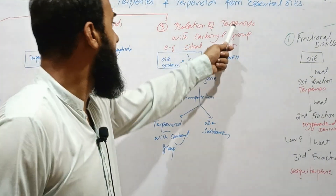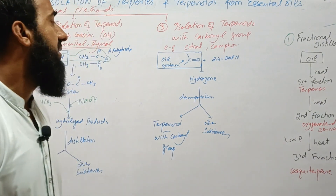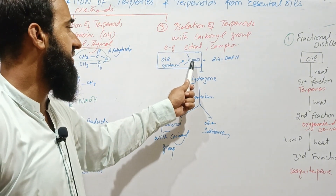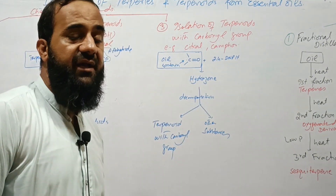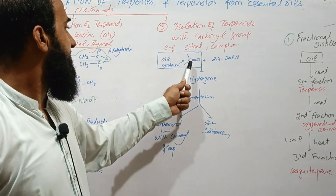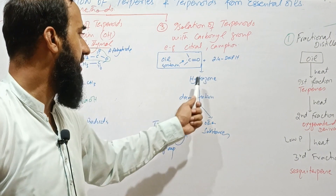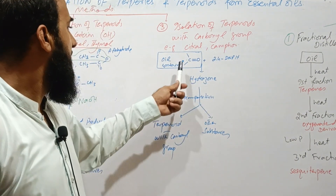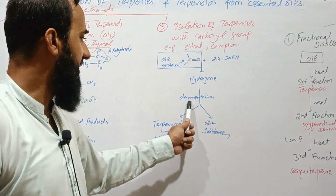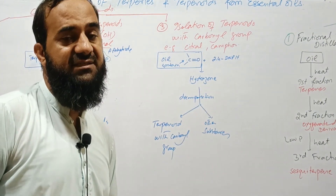In the third chemical method, we isolate terpenoids which contain a carbonyl group, for example citral or camphor. The sample containing carbonyl group terpenoids is treated with 2,4-dinitrophenylhydrazine; we can also use hydroxylamine. The carbonyl group condenses with 2,4-dinitrophenylhydrazine to form a hydrazone, which gives a characteristic color. We separate the hydrazone from the rest of the mixture. The hydrazone then undergoes decomposition followed by distillation, and finally we get the terpenoids with the carbonyl group as the main product, with other substances removed.